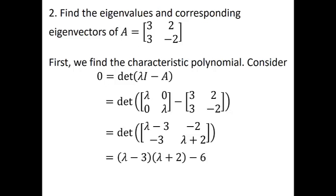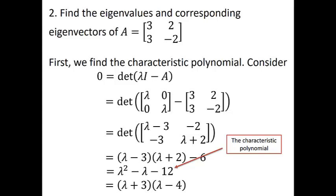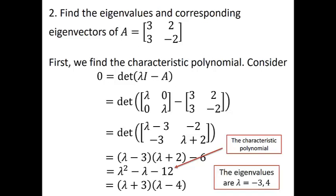We compute that determinant, and when we clean it up with our algebra, we see that it factors nicely into (lambda + 3)(lambda - 4). The characteristic polynomial is that determinant of lambda I minus A written as a polynomial, and our eigenvalues are the roots of that characteristic polynomial. So the eigenvalues in this example are negative 3 and 4.